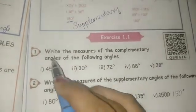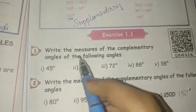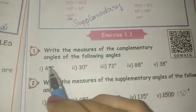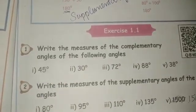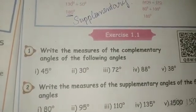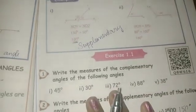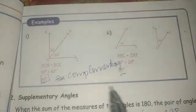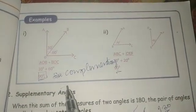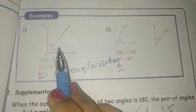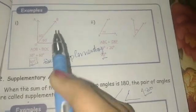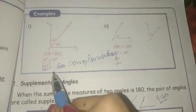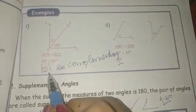First, write the measures of the complementary angle of the following angles. We will recap: the complementary angle is when two angles sum to 90 degrees.